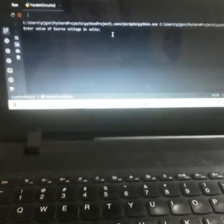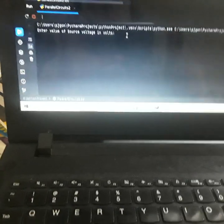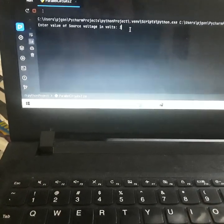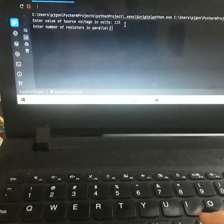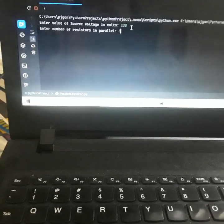Let's press here the run button. So we enter the values. Value for the source voltage is 120. Number of resistors in parallel is 3.